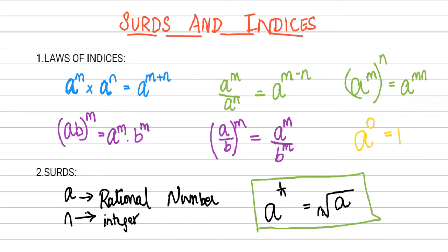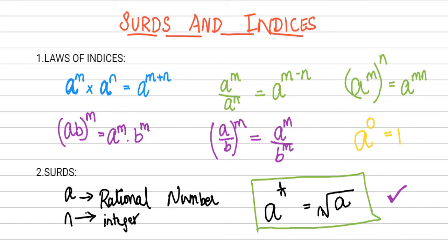For example, 1.5 can be represented as 3 over 2, so it is a rational number. But numbers like root 2, root 3, root 5 cannot be expressed as a fraction — so we call them irrational numbers. This is what surds means. Now that we understand what surds are, let's look at some of the laws and facts behind them.